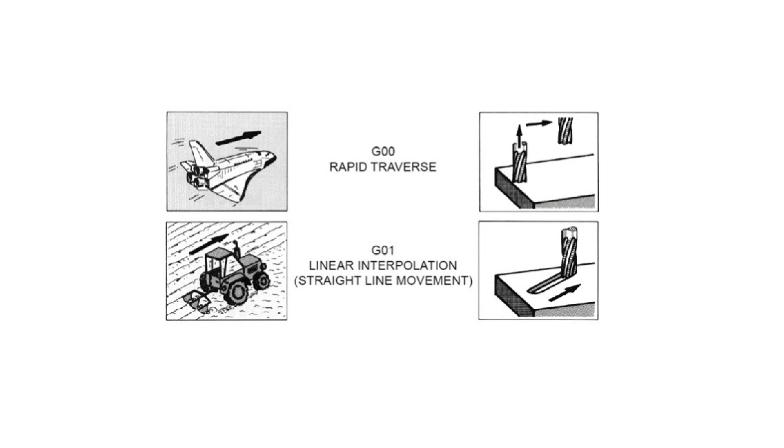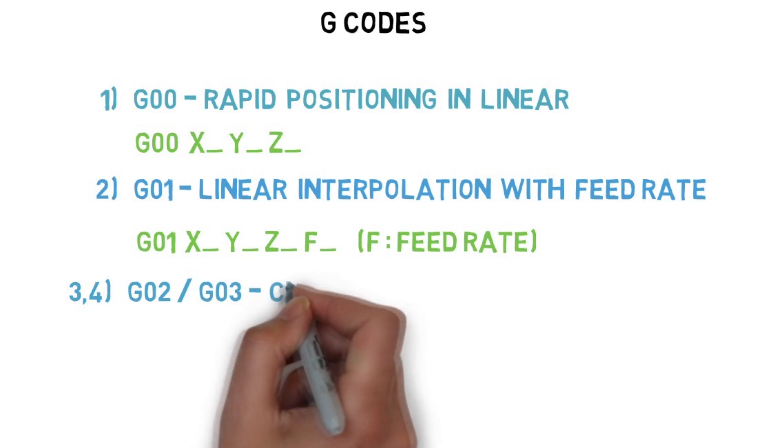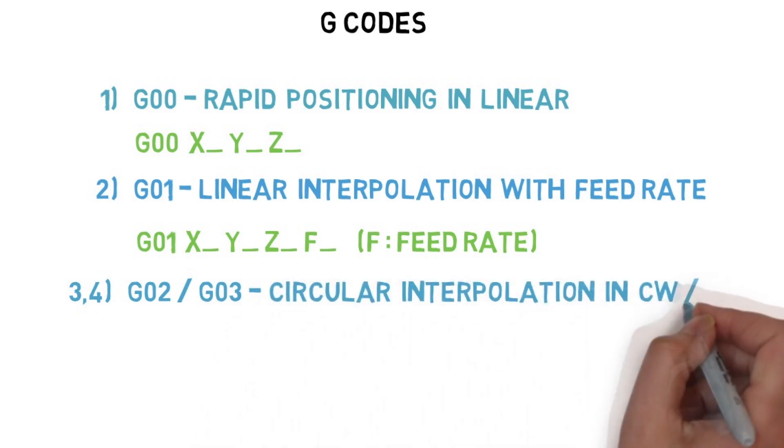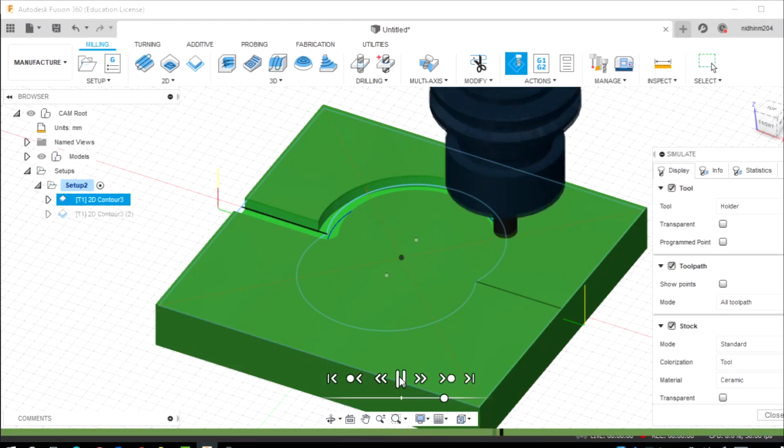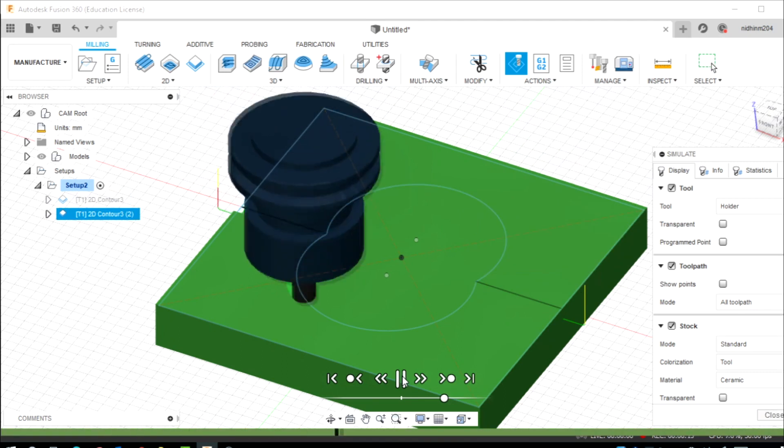G00 is used for non-cutting rapid moves and G01 is used for cutting movements. If the profile needs any circular arc movements, then we use G02 and G03. G02 is used for circular interpolation in clockwise direction and G03 is used for counterclockwise direction.